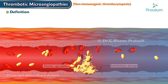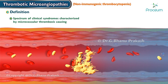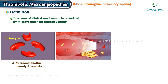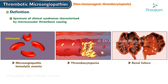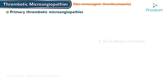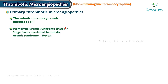Thrombotic microangiopathies is a spectrum of clinical syndromes characterized by microvascular thrombosis causing microangiopathic hemolytic anemias, thrombocytopenia, and renal failure in few cases. Primary thrombotic microangiopathies include thrombotic thrombocytopenic purpura, hemolytic uremic syndrome or shiga toxin mediated HUS (the most typical version), and atypical hemolytic uremic syndrome.